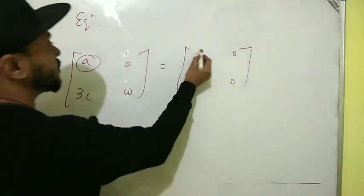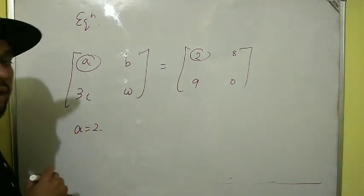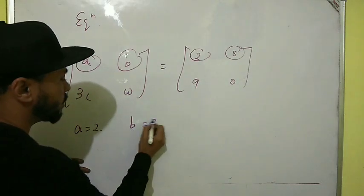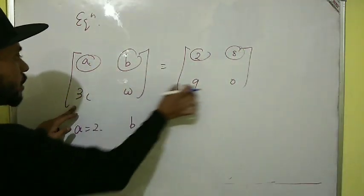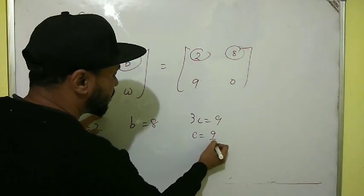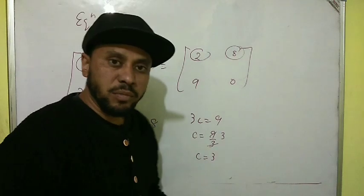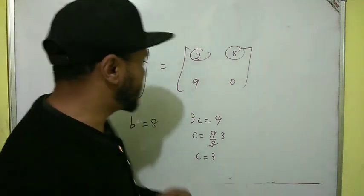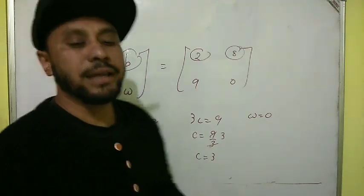Similarly in an equation, we can equate only if the order of the matrices is the same. Equating first with first: a equals 2. b equals 8. Third with third: 3c equals 9, so c equals 9 divided by 3 — cross multiplication. And w equals 0. This is how we equate.